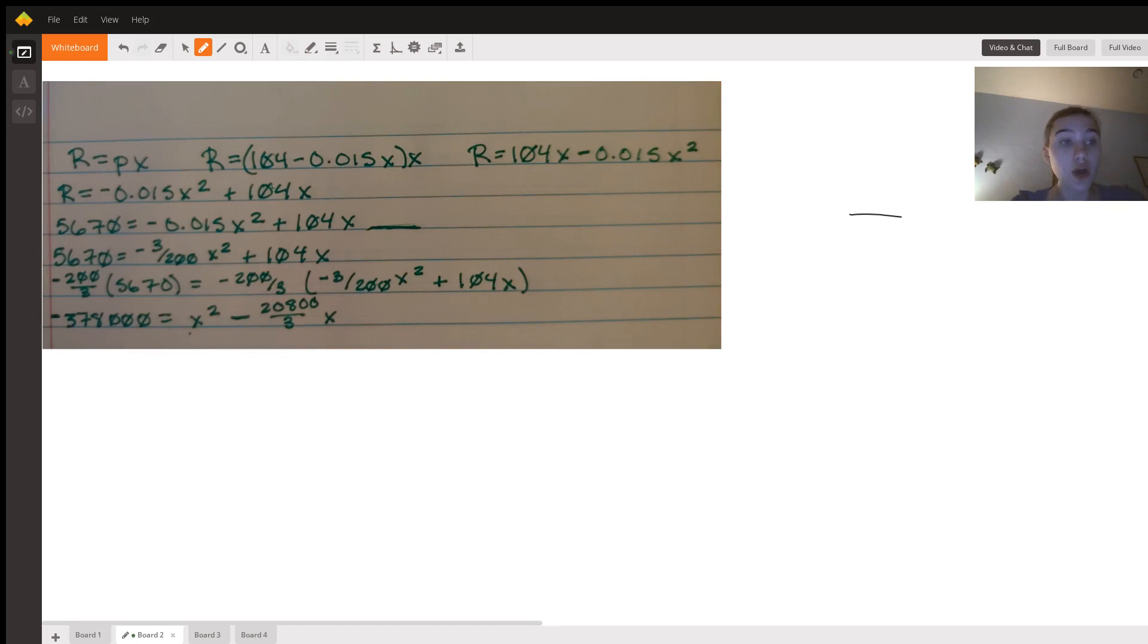So we know that r equals px, and we know what p equals. p equals 104 minus 0.015x. So we can just plug that in, and now we can say r equals 104 minus 0.015x times x, and we can multiply that x out, resulting in the equation on the far right, r equals 104x minus 0.015x squared.